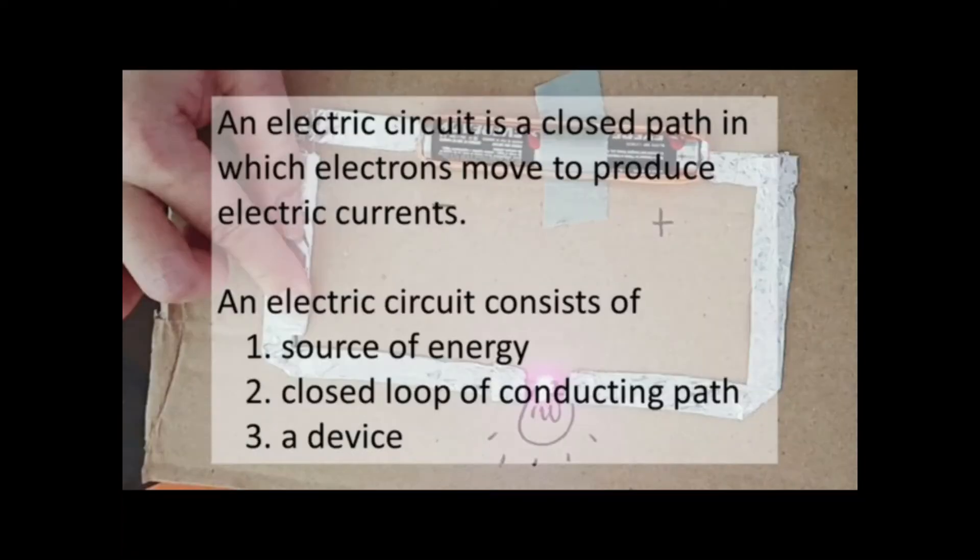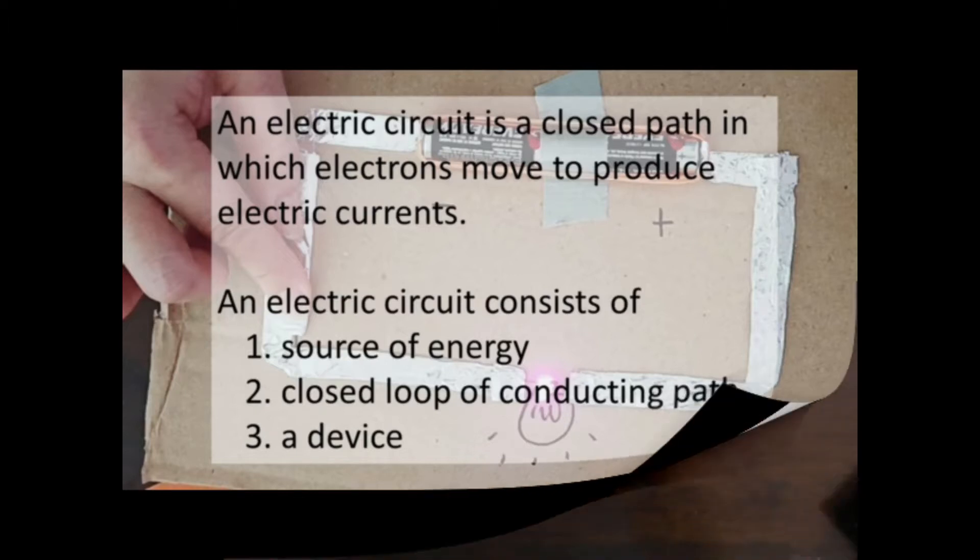An electric circuit is a closed path in which electrons move to produce electric currents and consist of a source of energy, closed loop of conducting path and a device.